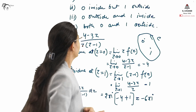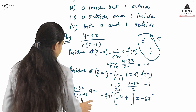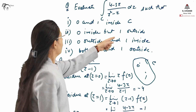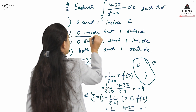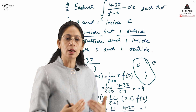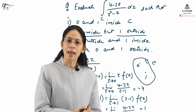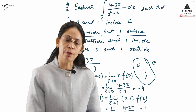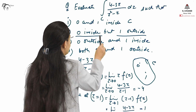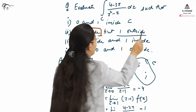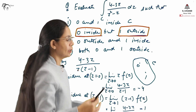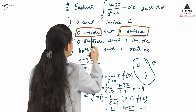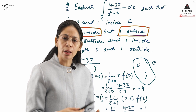For Case 2, when z = 0 is inside C but z = 1 is outside C: we recall the Cauchy theorem, which states that if F(z) is analytic then the integral of F(z) dz is zero. Since z = 1 is outside, only z = 0 is a singularity inside C. If z = 0 were also removed, the function would be analytic, so we calculate only the residue at z = 0.